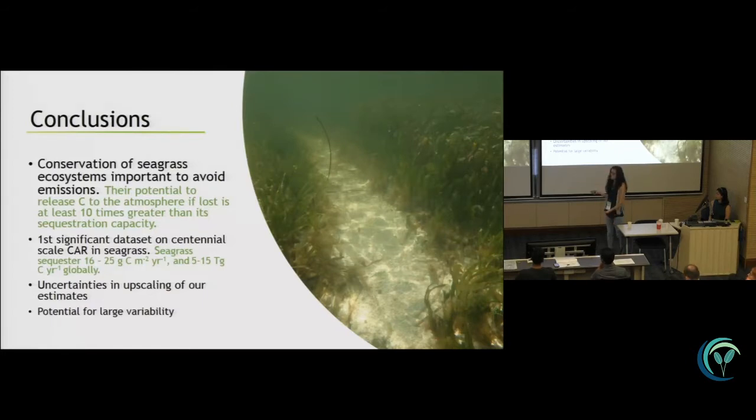And, of course, there are many uncertainties in upscaling our results but also there's a potential for large variability as we have seen that there are systems like Shark Bay or Florida Bay where the rates of carbon accumulation are higher or more or less the same that are in mangrove ecosystems. That's it.